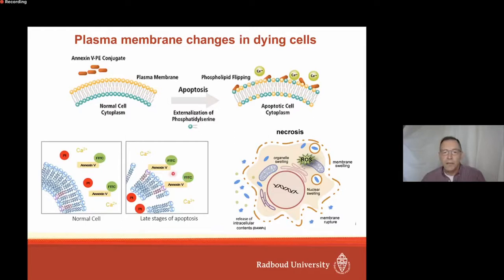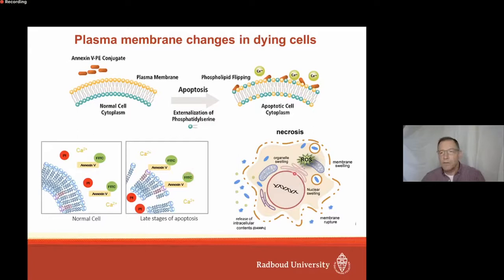Phosphatidylserine is bound by a protein called annexin-5. When annexin-5 coupled to a fluorescent dye is used, it can be applied to monitor this process of phospholipid flipping to detect apoptotic cells. Late during apoptosis, when the plasma membrane is ruptured, another compound, propidium iodide, can be used to monitor this process - it cannot enter the cell when the membrane is intact, but when ruptured it enters the cell, binds to DNA, and the cells become stained. For necrosis, membrane rupture occurs relatively early, meaning both annexin-5 and propidium iodide can enter the cell.